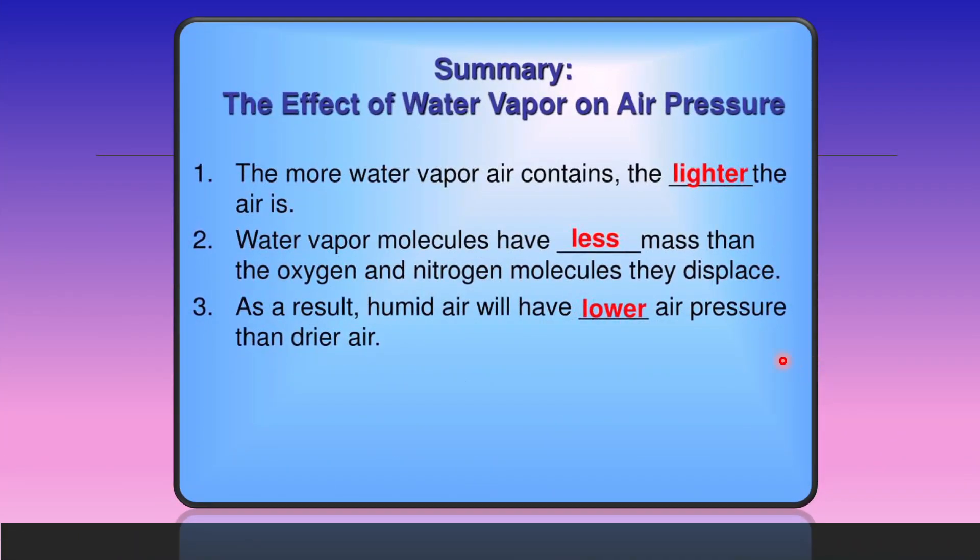Now water vapor, that is also an important factor which affects the air pressure. The air with water vapor or the humid air is lighter than dry air because water vapor present in the air displaces an equal volume of nitrogen and oxygen, thus making the air lighter. Water vapor has latent heat, that is hidden heat, which also makes the air lighter.